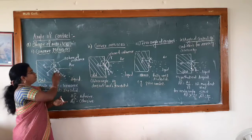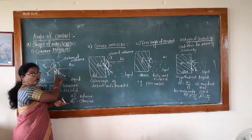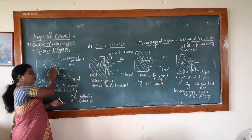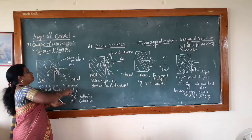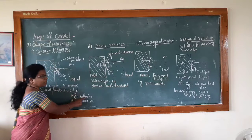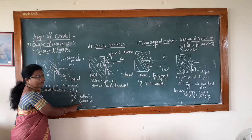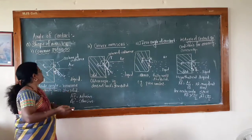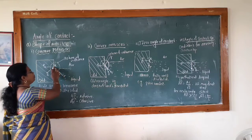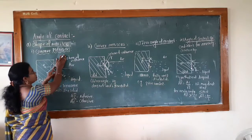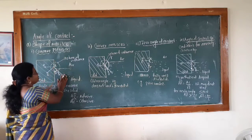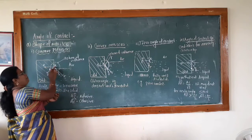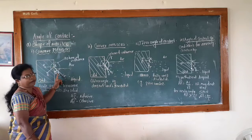Cohesive force means the intermolecular force between molecules of the same material — same liquid. That means liquid-liquid molecules have a cohesive force. At the point of contact there is an adhesive force which I have shown here by AP bar. This AP bar is nothing but adhesive force. This AC bar is nothing but cohesive force. Now, depending on this there is an angle of contact — it should be acute or obtuse.